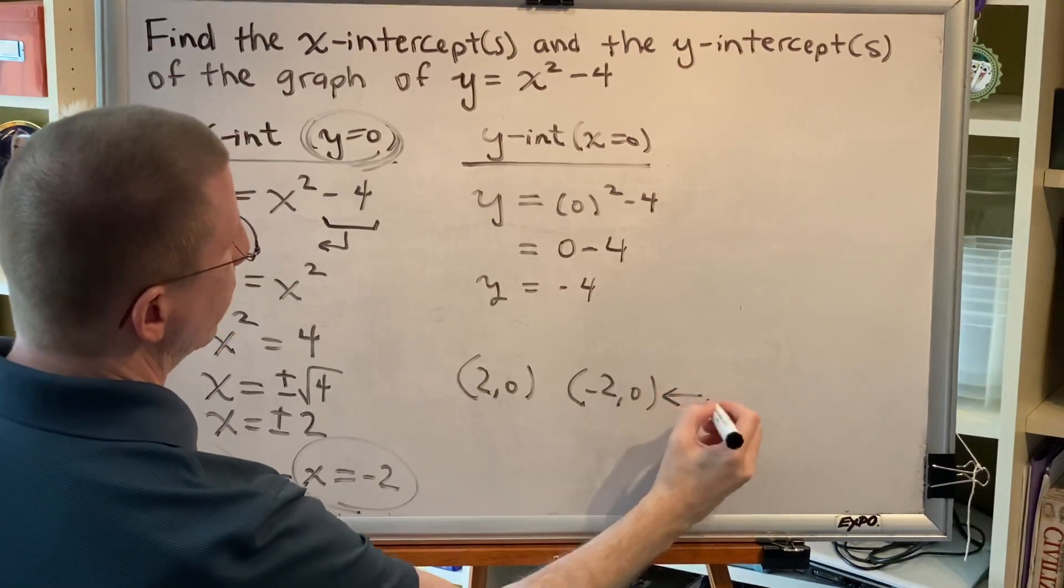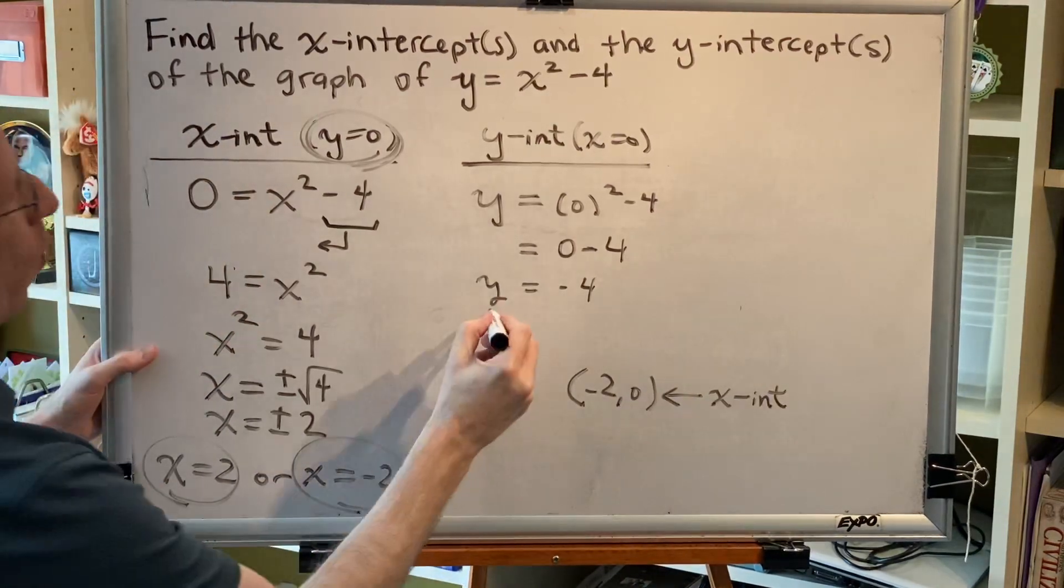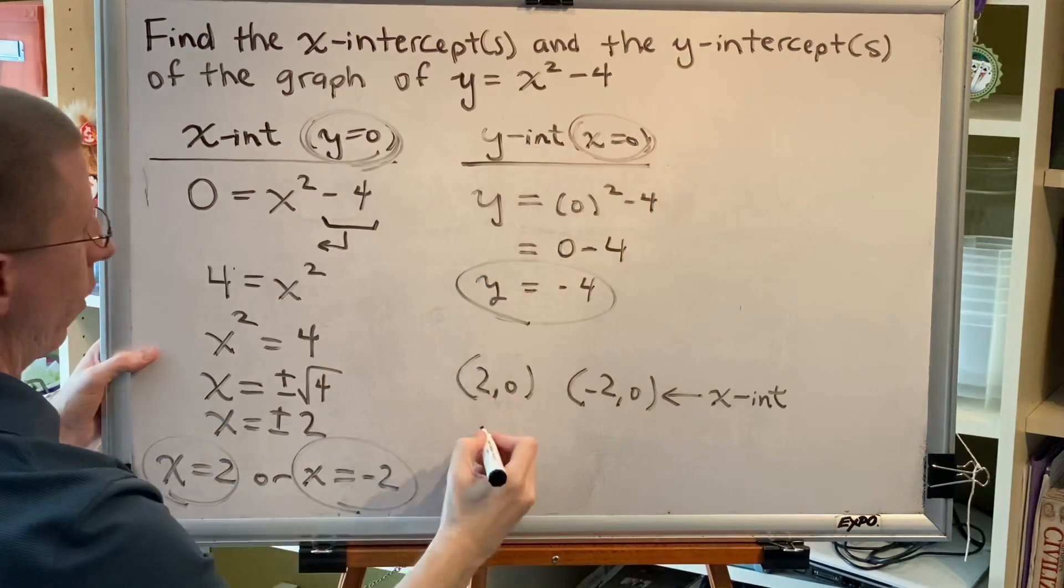These are our two x-intercepts. There is, however, only one y-intercept, and I can link these together: (0, -4).